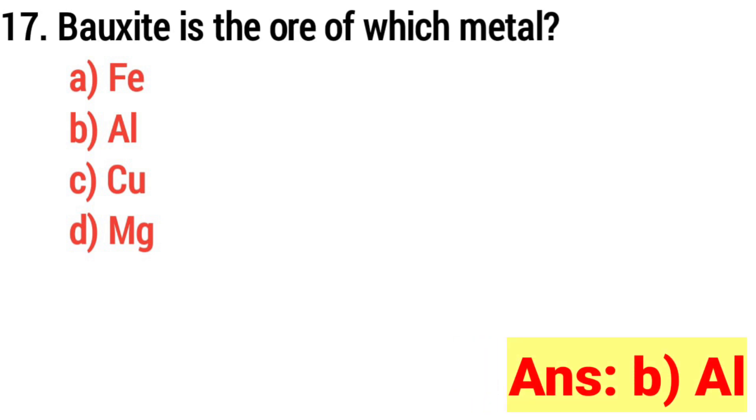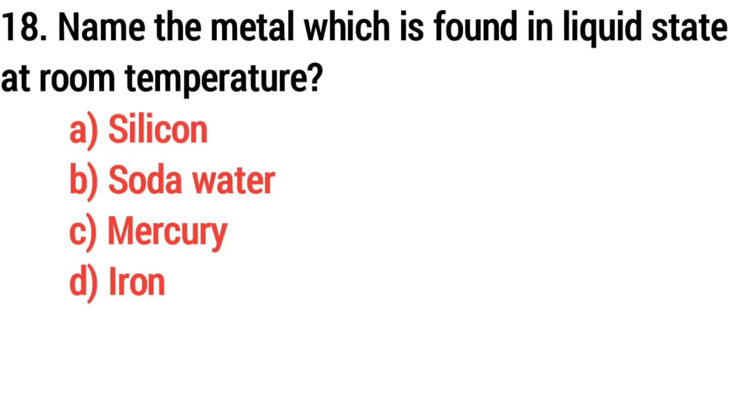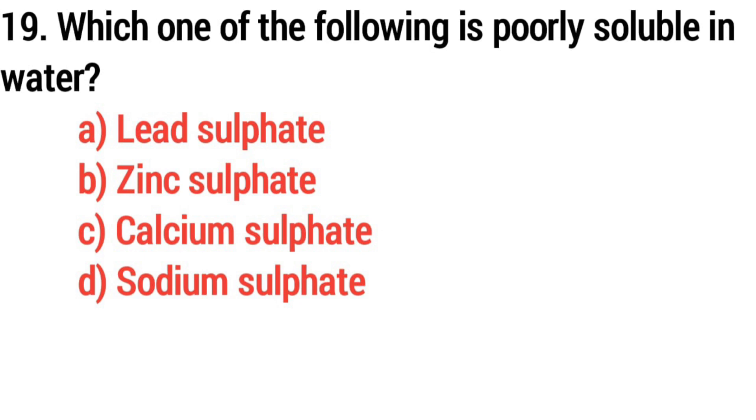Answer: option B, aluminum. Question 18: name a metal which is found in liquid state at room temperature? Answer: option C, mercury.